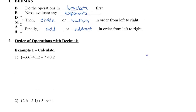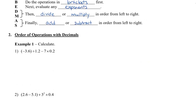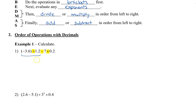Let's take a look at an example of an order of operations question with decimals. We have three operations: division, subtraction, and multiplication. The brackets here only surround a single number, so those brackets don't count. We don't have any exponents, so we're going to do the division first. We have negative 3.6 divided by 1.2. Since 12 goes into 36, we know that 1.2 also goes into 3.6, and that's going to be negative 3.